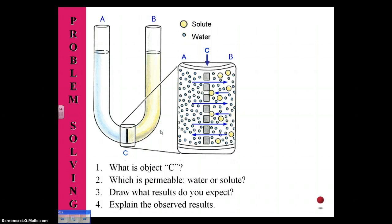The diagram you see is a U-shaped structure with side A and side B, and in the middle is a structure with perforated edges. We have solutes and solvent, or in this case water. Take a moment and answer questions 1, 2, 3, and 4. At this time, pause the video and answer questions 1 through 4.